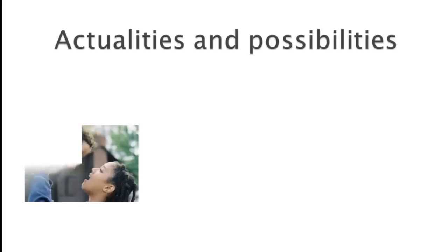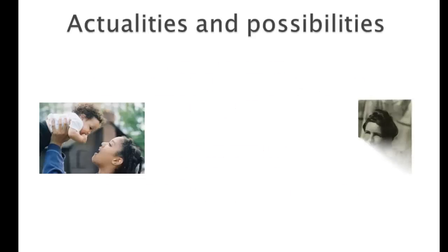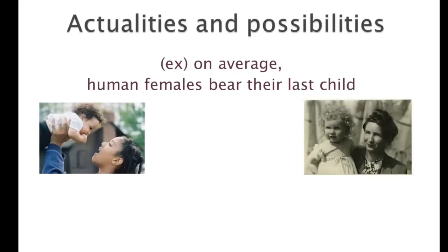One way to think about this is in terms of actualities and hypothetical possibilities. We all take fairly well for granted the basic patterns of human life history. If we look across traditional human populations, on average human females bear their first child at age 19. We might pose a hypothetical: why not mature and have children at age eight? All of us would recoil and say that's far too young. But the evolutionary — the ultimate — question is: why has that pattern evolved at age 19 rather than a pattern where childbearing begins much sooner?